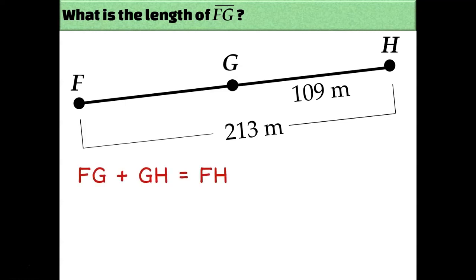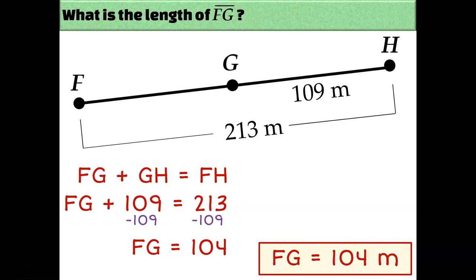Let's go ahead and set up our segment addition postulate. For this diagram, our segment addition postulate would look like this: FG plus GH equals FH. So let's plug in the information. I'm going to leave FG as FG because that's the length I don't know. GH is labeled as 109, and FH is labeled as 213. So if I want to solve for FG, I would just subtract 109 from both sides and get my answer of 104. So FG must be 104 meters.